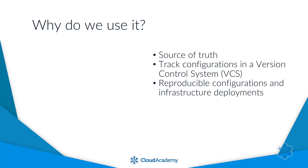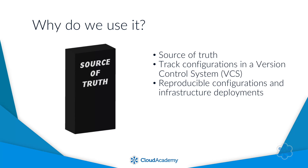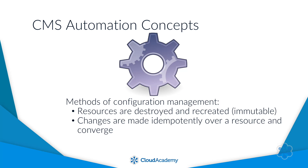A configuration management system, or CMS, provides a source of truth for your system's configurations. This allows you to leverage a version control system, or VCS, to store and track configurations. Versioning of configuration management code allows for easy rollbacks in case of problems. Using a VCS together with your CMS will greatly increase the ability to reproduce and maintain your systems, as well as fully automate the deployment and provisioning of systems and software.